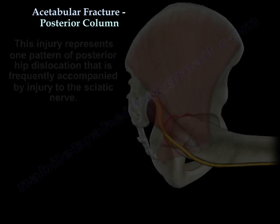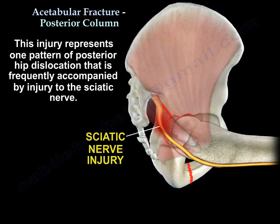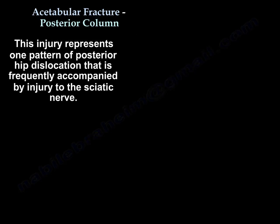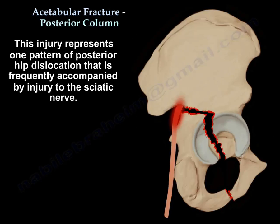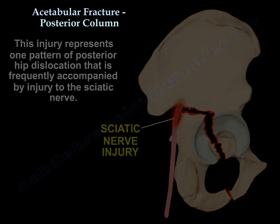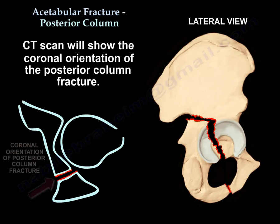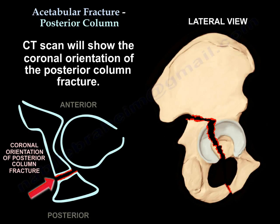This injury represents one pattern of posterior hip dislocation that is frequently accompanied by injury to the sciatic nerve. The CT scan will show the coronal orientation of the posterior column fracture.